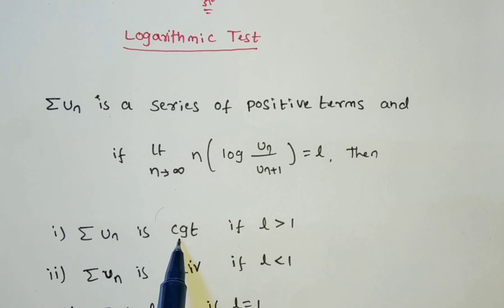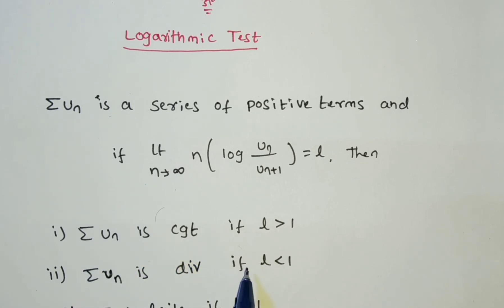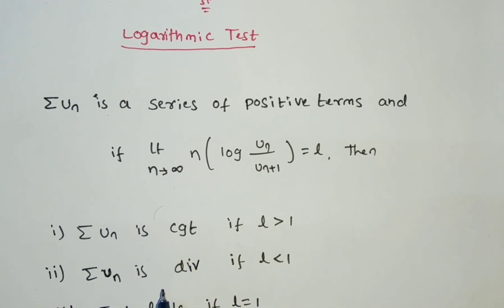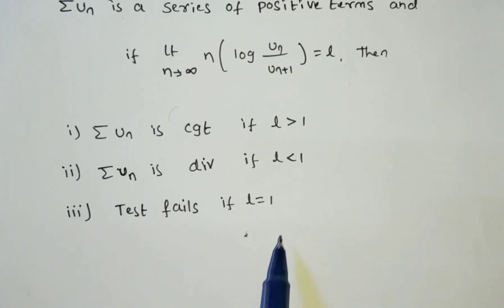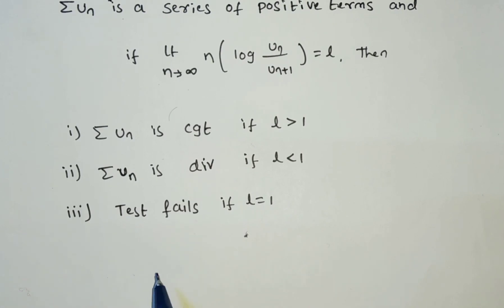If l is greater than 1, summation un is convergent. If l is less than 1, summation un is divergent. If l is equal to 1, the test fails.